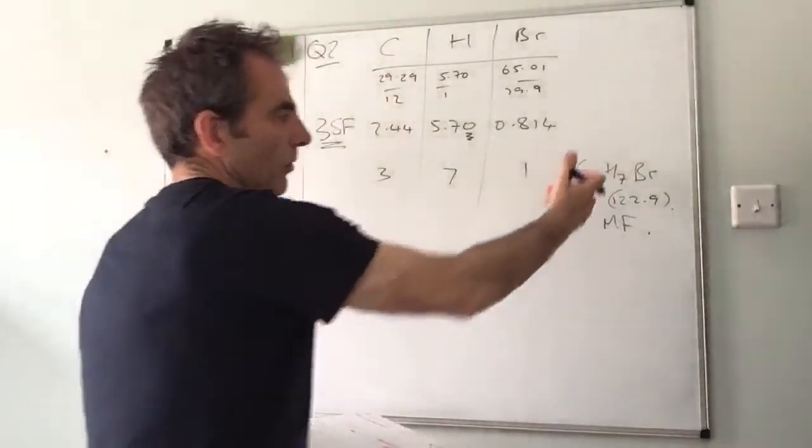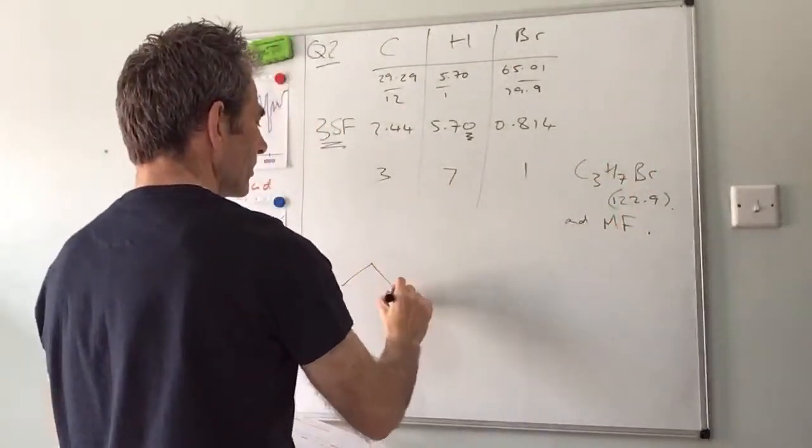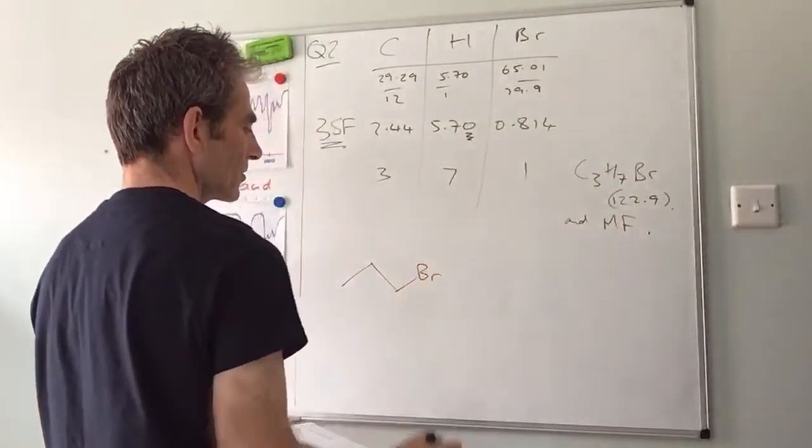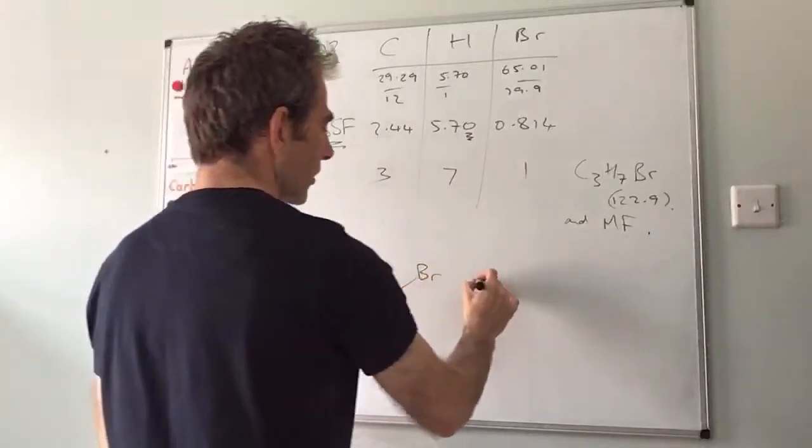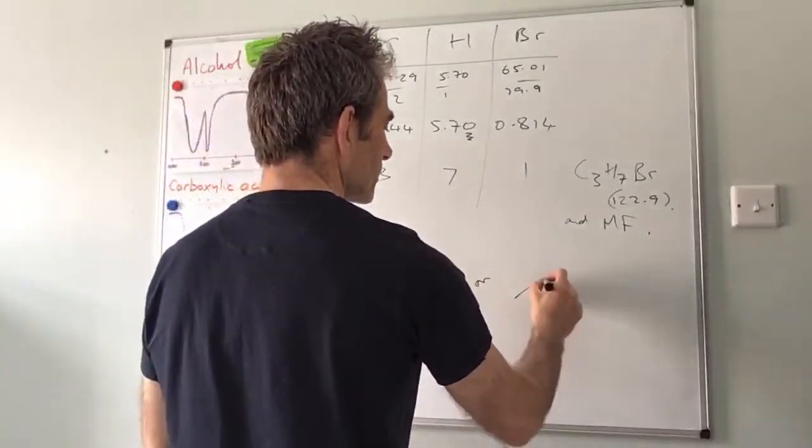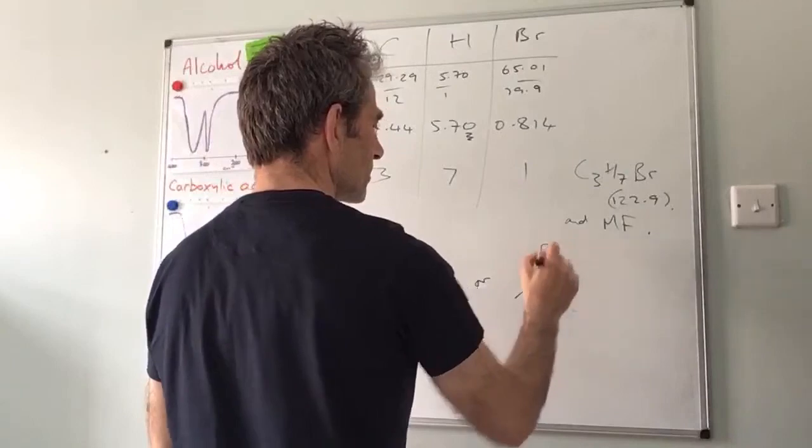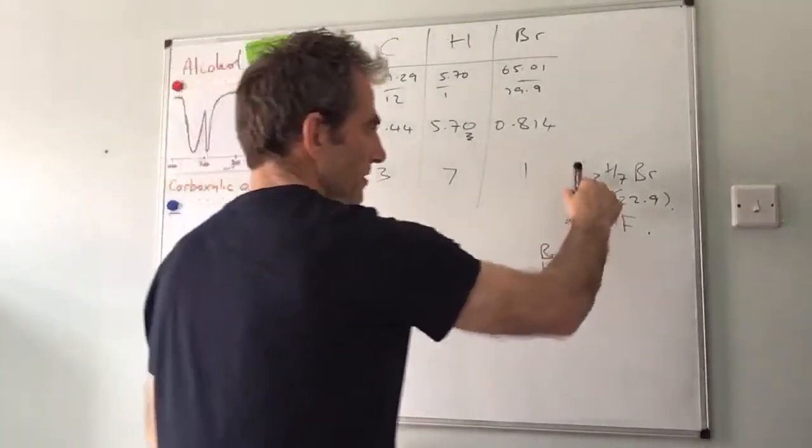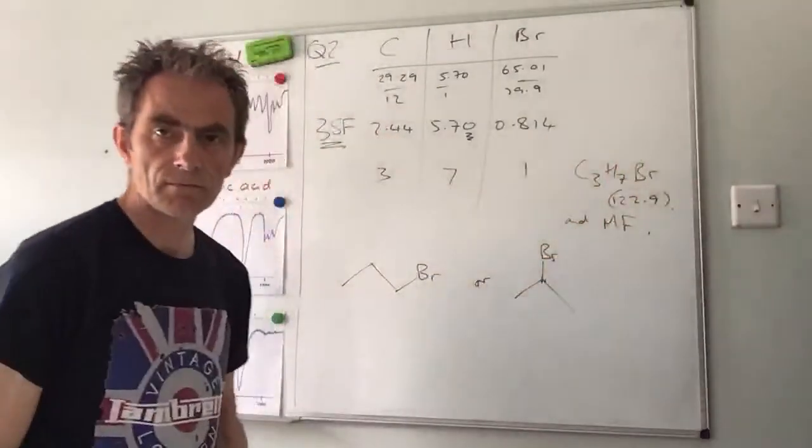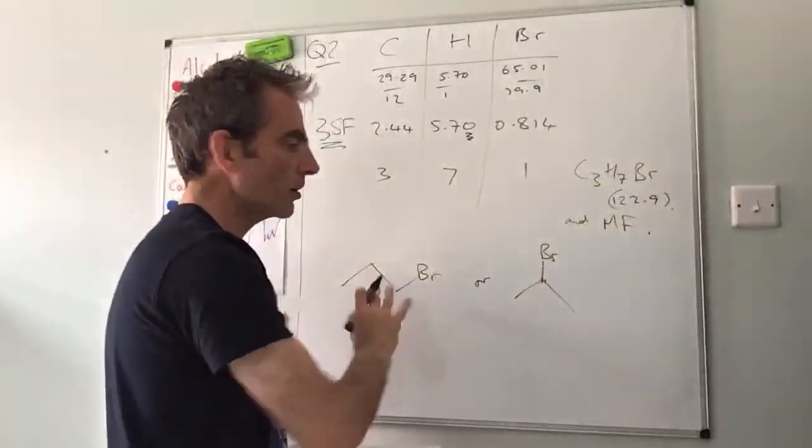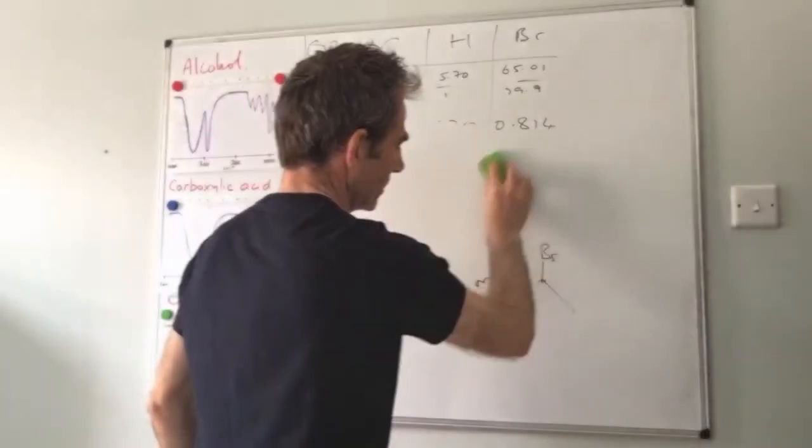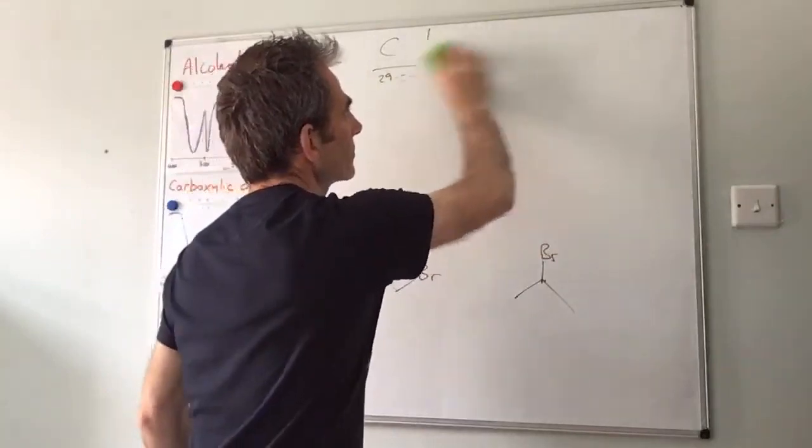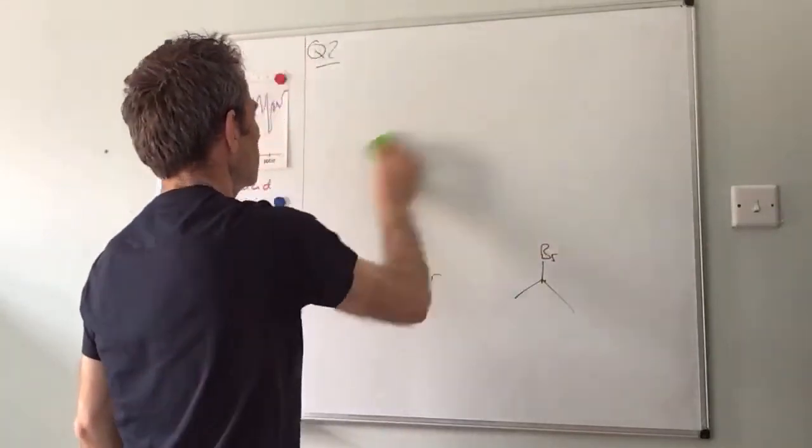So therefore what are our options? Well, three carbons, bromine at the end - so 1-bromopropane, or three carbons with bromine at number two. Both of those have C3H7Br as their formula. So they were your options. I'll keep these on the board because we're going to refer back to them.